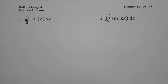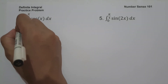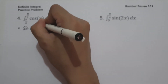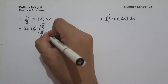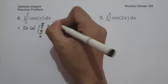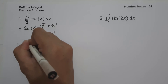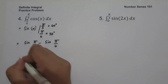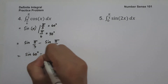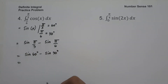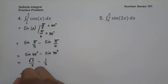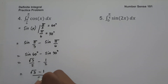On example number 4, what is the antiderivative of cosine x dx evaluated from pi over 6 to pi over 3? The antiderivative of cosine x is sine x, evaluated from pi over 6 to pi over 3. Pi over 6 is 30 degrees and pi over 3 is 60 degrees. This gives sine pi over 3 minus sine pi over 6, or sine 60 degrees minus sine 30 degrees. Sine 60 degrees is square root of 3 over 2, and sine 30 degrees is 1 half. So the answer is square root of 3 minus 1, all over 2.